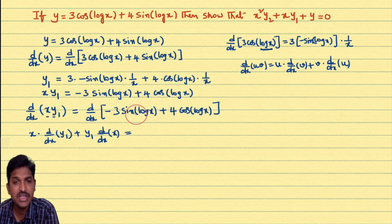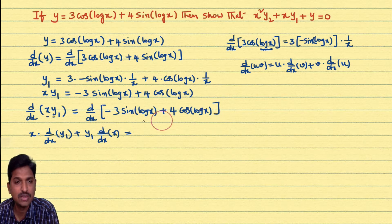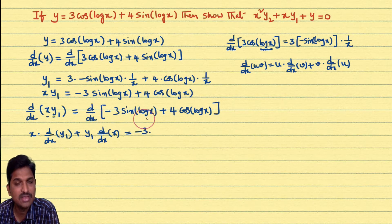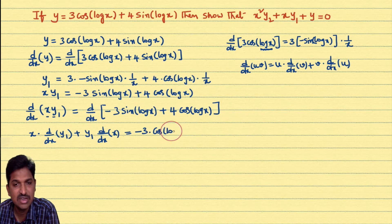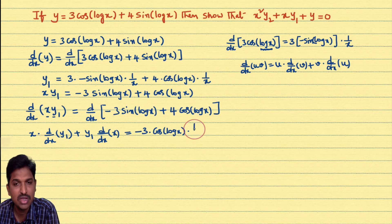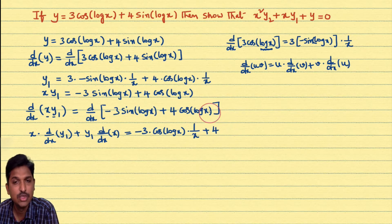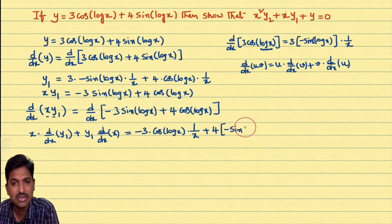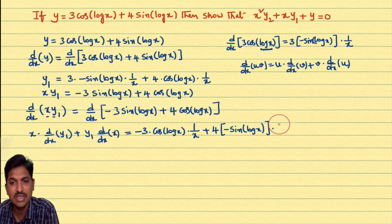Differentiating each term on the right: derivative of -3sin(log x) — take -3 outside, imagine log x as x, derivative of sin x is cos x, so -3cos(log x)·(1/x). Derivative of 4cos(log x) — take 4 outside, derivative of cos x is -sin x, so -4sin(log x)·(1/x). Both terms contain 1/x; take it common.